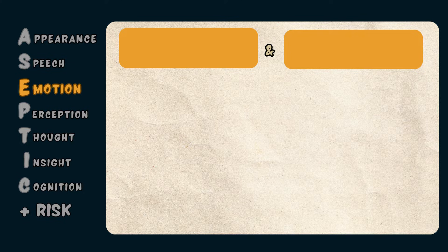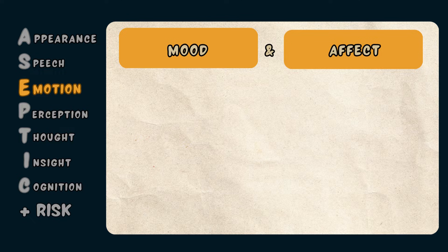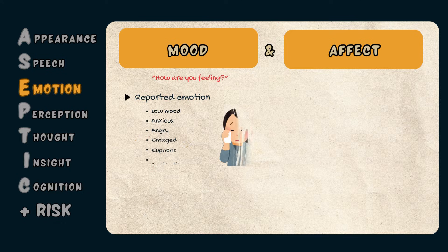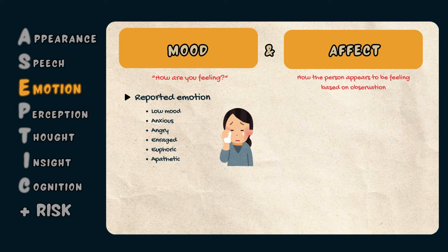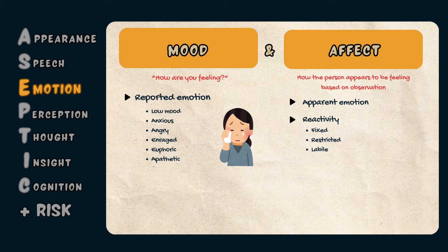The E in ASEPTIC stands for Emotion. Emotion can be broken down into two components: mood and affect. Mood is subjective and refers to the patient's own assessment of their current emotional state, assessed simply by asking 'How are you feeling?' Patients may describe their mood as low, anxious, angry, enraged, euphoric, or apathetic. Affect is objective and refers to what the examiner observes, including the patient's apparent emotion and the reactivity of their emotional state, which can be described as fixed, restricted, or labile. Affect can also be described in terms of intensity — exaggerated, blunted, flat, or normal.